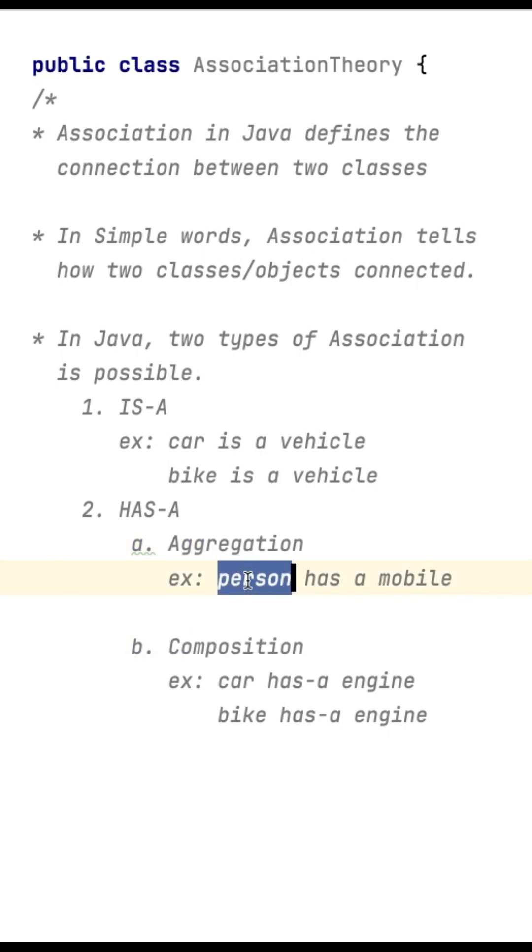In aggregation, one object can exist without other object. But in composition, car object cannot exist without engine. Similarly, bike cannot exist without engine.